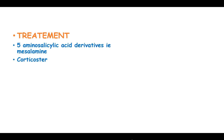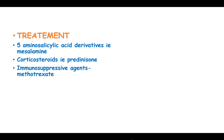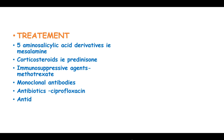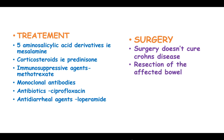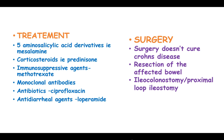Treatment of Crohn's disease includes administration of 5-aminosalicylic acid derivatives, corticosteroids such as prednisone, immunosuppressive agents, monoclonal antibodies, and antibiotics. Surgery does not cure Crohn's disease but may be required to resect the affected bowel, including ileocolonostomy and proximal loop ileostomy, together with fistula surgery and strictureplasty.